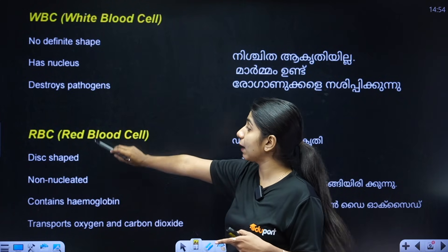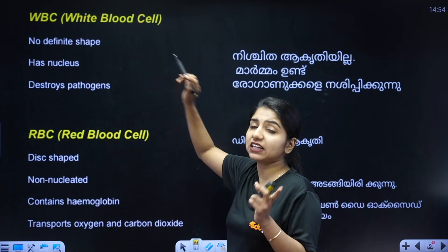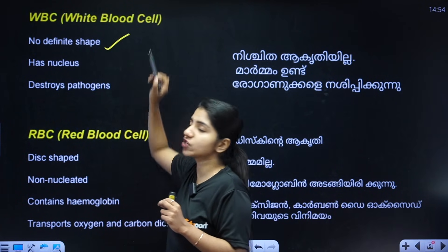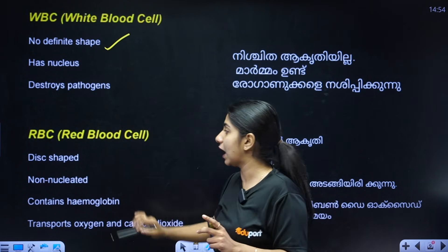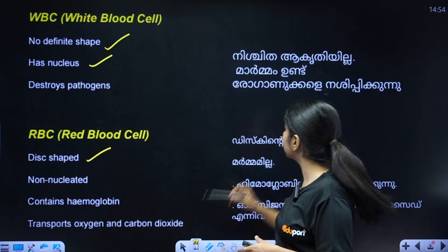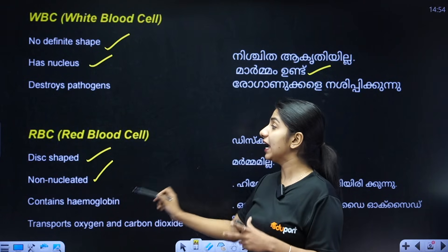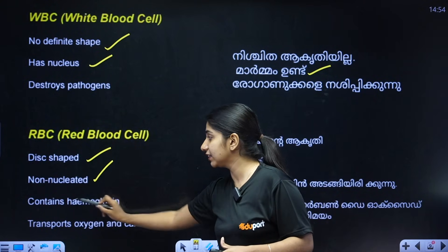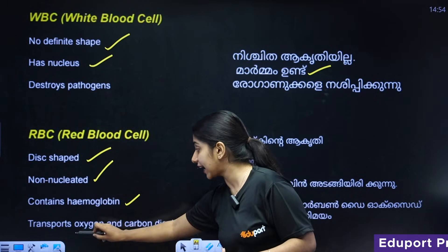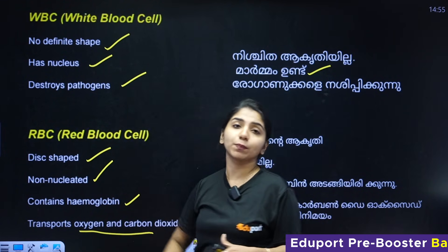WBC stands for White Blood Cells. WBC has no definite shape. RBC is disc-shaped. RBC has no nucleus. RBC contains hemoglobin and transports oxygen and carbon dioxide, and WBC destroys pathogens.